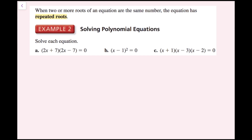When two or more roots of an equation are the same number, the equation has repeated roots. For example 2, we're going to solve each equation and see an example with repeated roots. For part A, I have 2x plus 7 times the quantity 2x minus 7 equals zero.